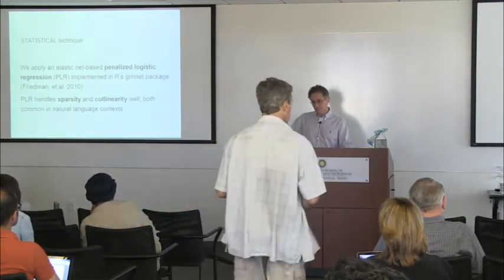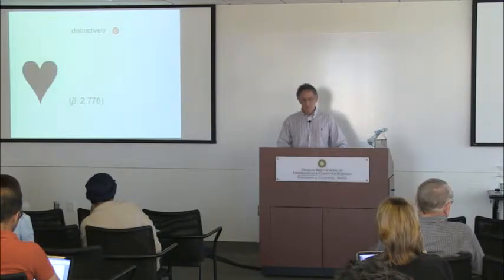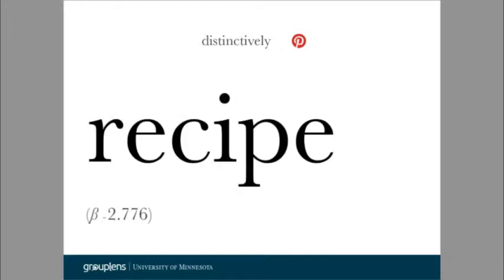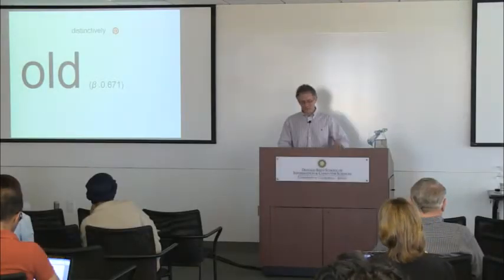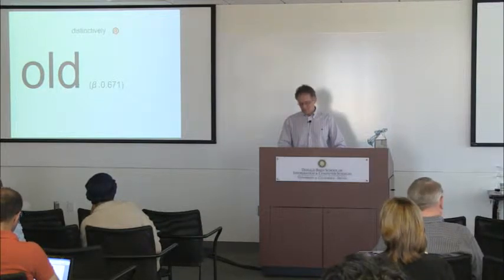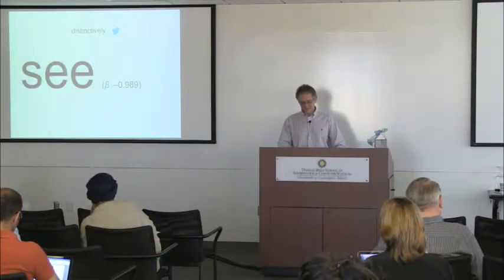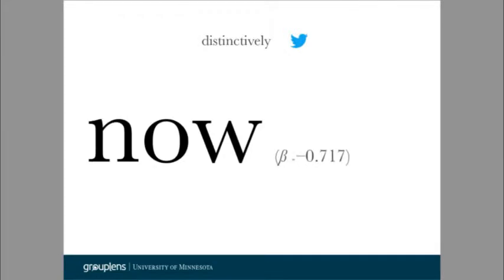We got text for these 2,600 people covering 217,000 pins and 737,000 tweets. We applied logistic regression to understand what words are most distinctive of Pinterest versus Twitter. On Pinterest: DIY, 'heart' as in 'I heart this,' recipe, and 'old' — maybe antiques and old things. On Twitter: 'new,' 'what's going on now,' and 'tonight.' You're getting a feeling for what's characteristic of each social network — Pinterest focuses on old stuff and recipes, Twitter on what's new and what's happening now.